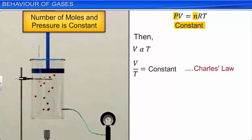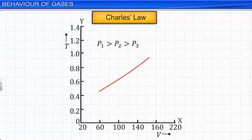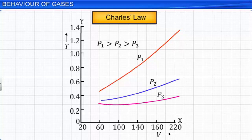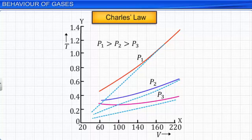If we plot a graph by taking volume on the x-axis and temperature on the y-axis at three different constant pressures, the graphs are as shown in the figure. The graph is well fitted at high temperature — that is, a straight line — but it is a curved line at low temperatures. This is according to Charles' law.